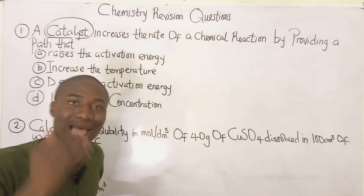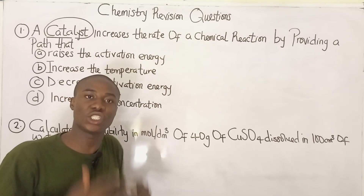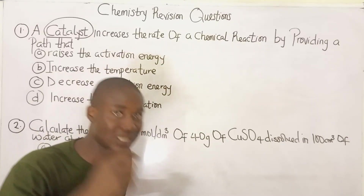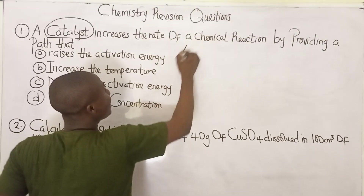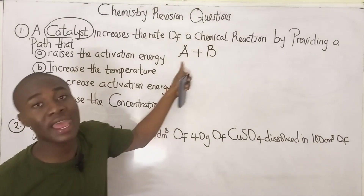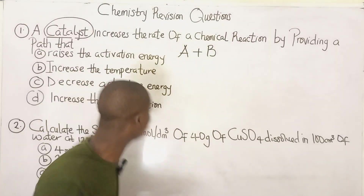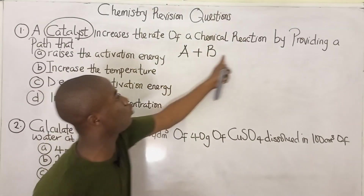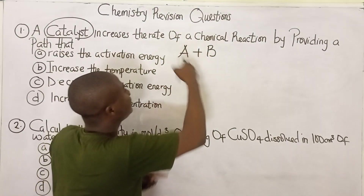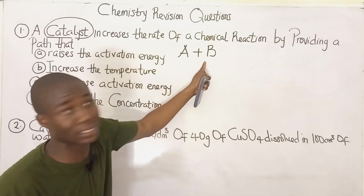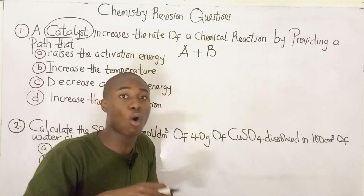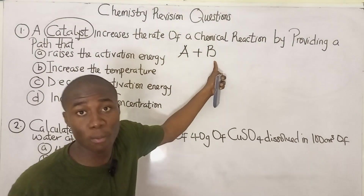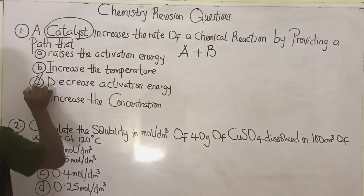Activation energy is the minimum energy required for colliding particles to overcome before any reaction can take place. For example, if A and B are reacting and they overcome activation energy, the reaction will take place — A + B → AB. So activation energy is the minimum energy required for colliding particles to overcome before the reaction takes place.